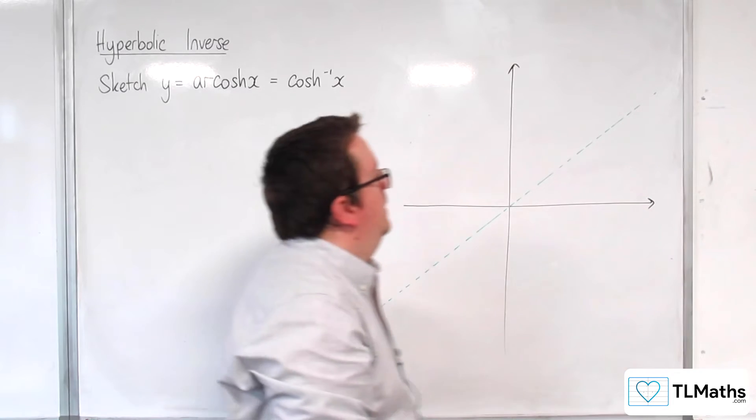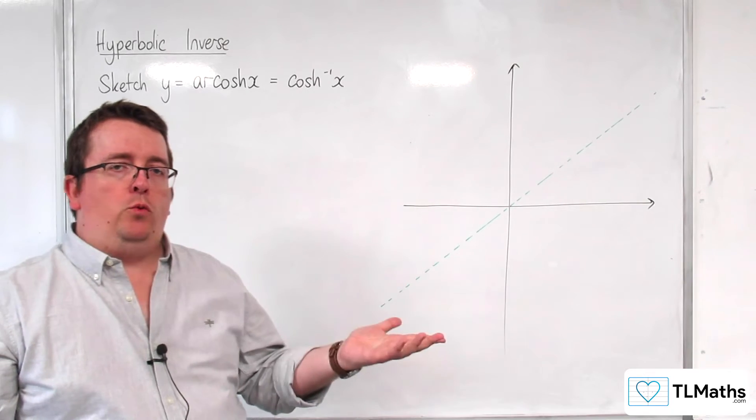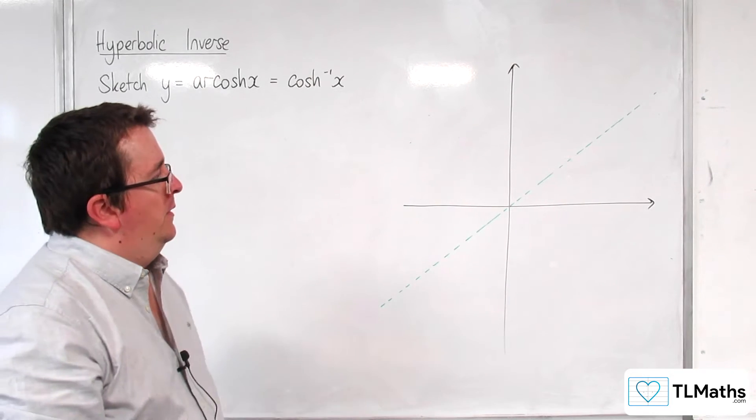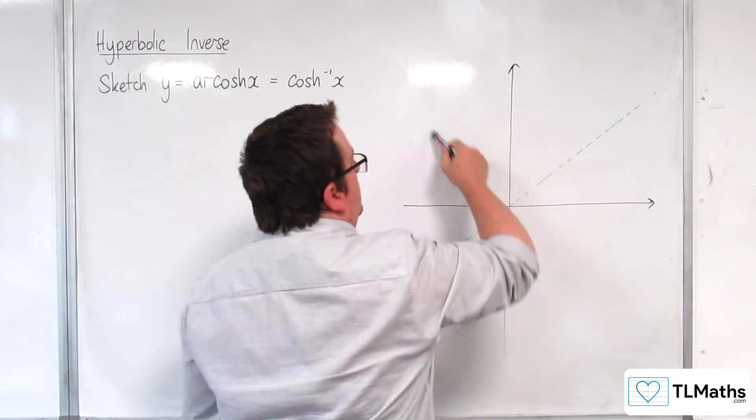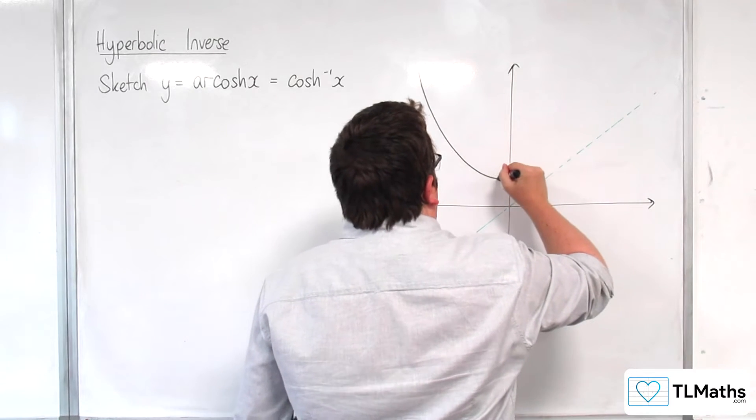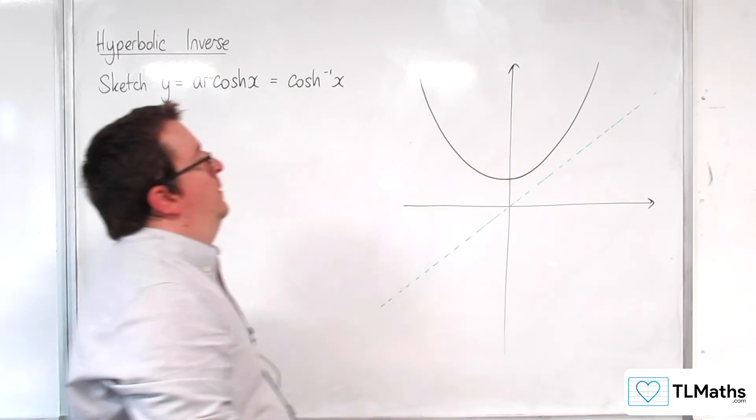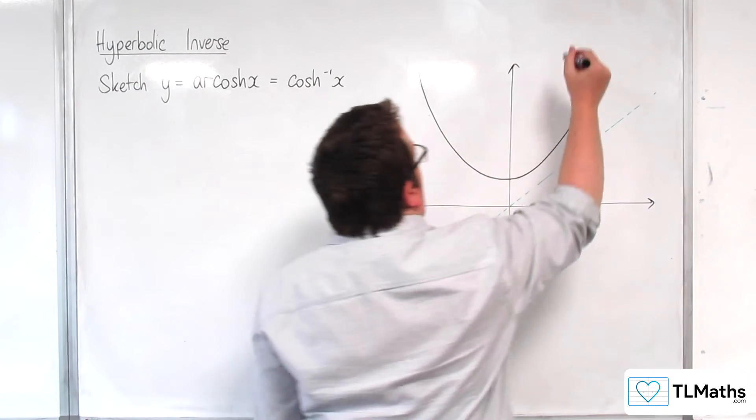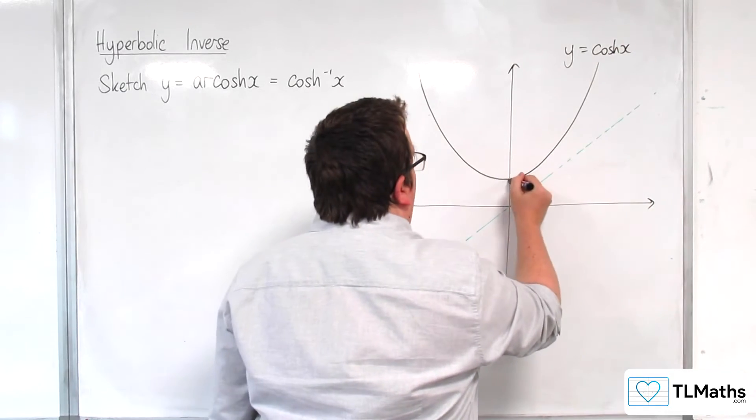Now, the thing about y equals cosh of x is that it looks just like this. Let's try drawing it. Here's y equals cosh of x. That's 1.